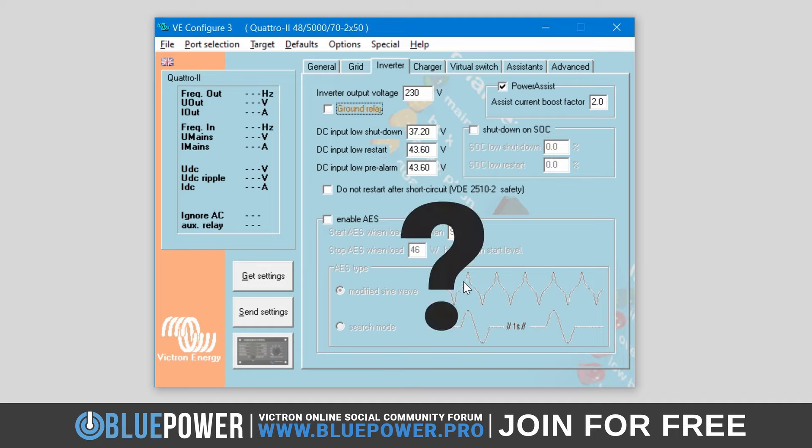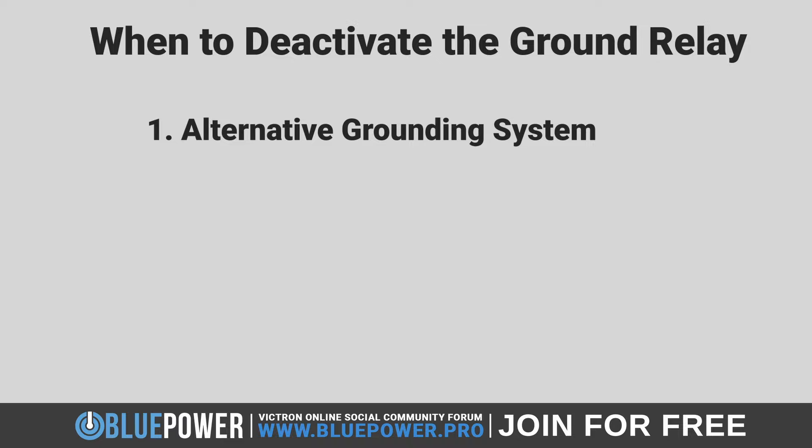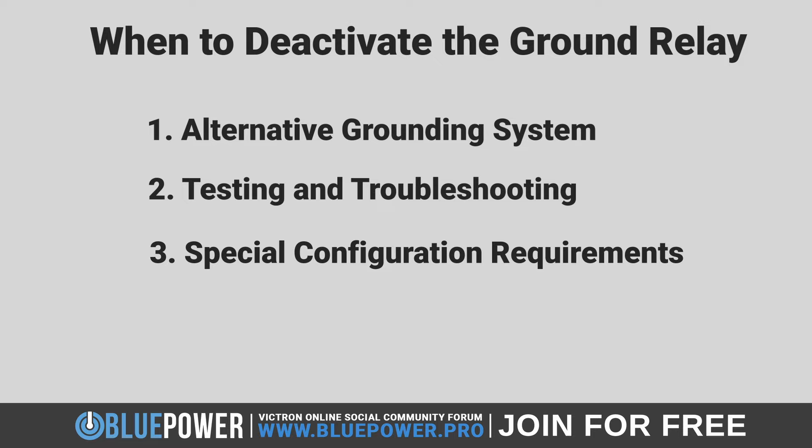In what scenarios would you actually disable the ground relay? While in the majority of cases it should not be deactivated, here are a few examples where it could be valid. If the electrical system has an alternative method of grounding that is safe and compliant with local electrical codes, you might deactivate the inverter's ground relay. In some troubleshooting scenarios, it might be necessary to temporarily deactivate it to isolate grounding issues — this should only be done under controlled conditions by a qualified technician. Some specific configurations might require it to be deactivated to meet particular operational criteria, but this is rare and should only be done based on manufacturer recommendations or under the guidance of an electrical engineer.